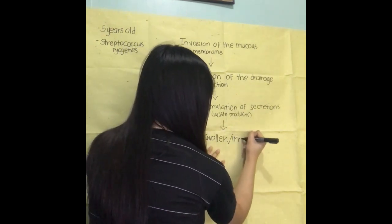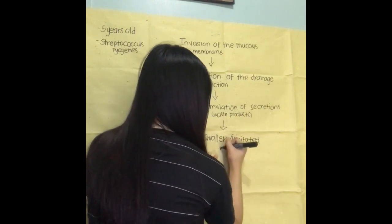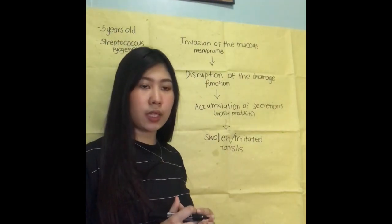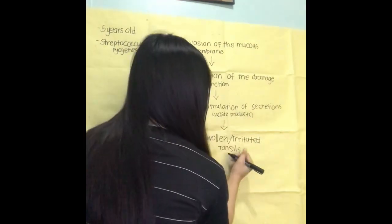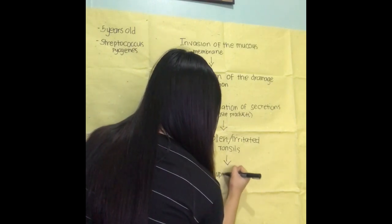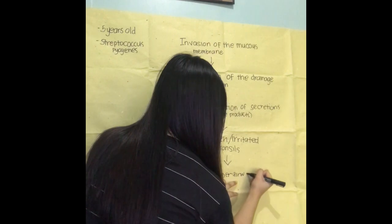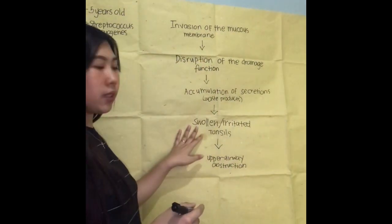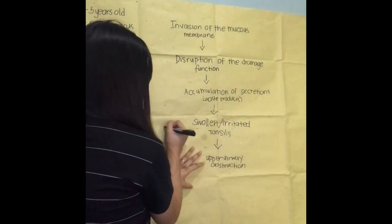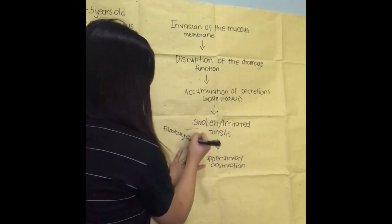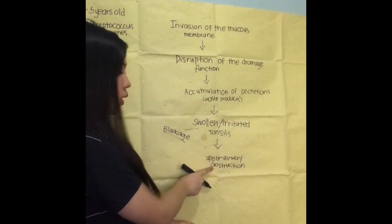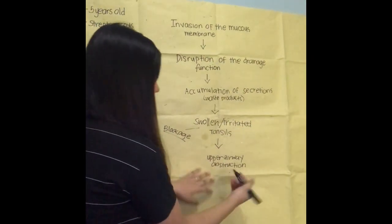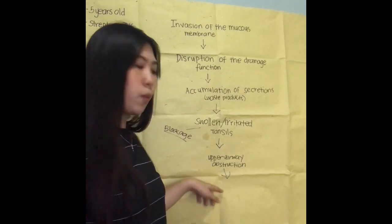After accumulation of secretions or waste products of the microbes, it will lead to the tonsils becoming inflamed or irritated. When that happens, because the tonsils are swollen or irritated, there will be a blockage, which can lead to upper airway obstruction — difficulty breathing and difficulty swallowing. If not given proper treatment, it can lead to infection.